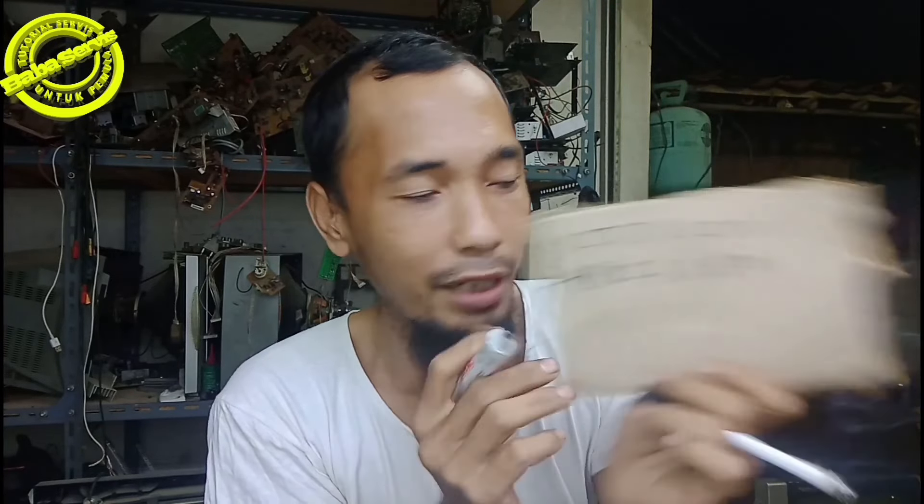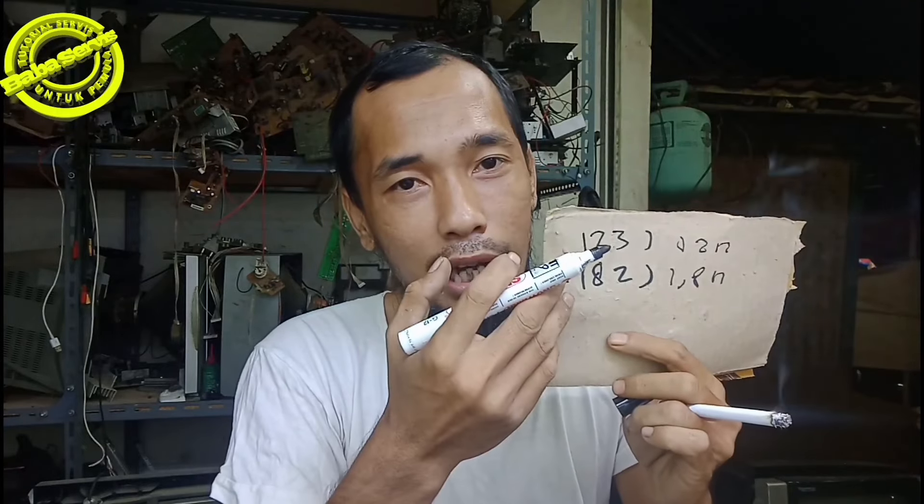Kode '123' dibaca sebagai 12 Nano, sedangkan kode '182' dibaca sebagai 1,8 Nano. Jadi 123 sebenarnya lebih besar dari 182. Bagaimana rumusnya? Bagaimana cara menghitungnya?